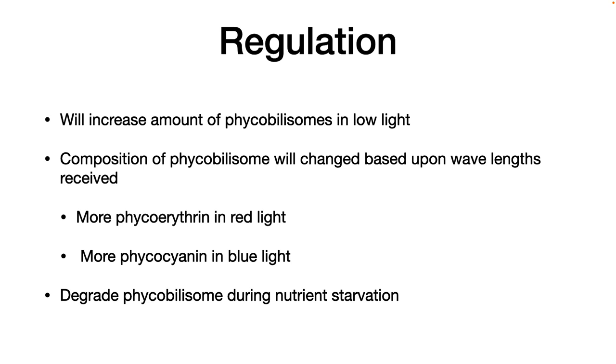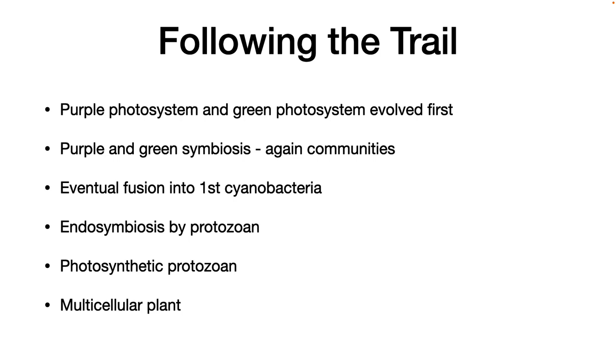Regulation in cyanobacteria. While cyanobacteria are obligate phototrophs, some can still alter pigments produced based on the wavelength and intensity of light that they receive. The composition of the phycobilisome will change. More phycoerythrin is expressed in red light and more phycocyanin in blue light. Also if the bacterium is starving, it will degrade its phycobillisomes to free cell carbon for other purposes.